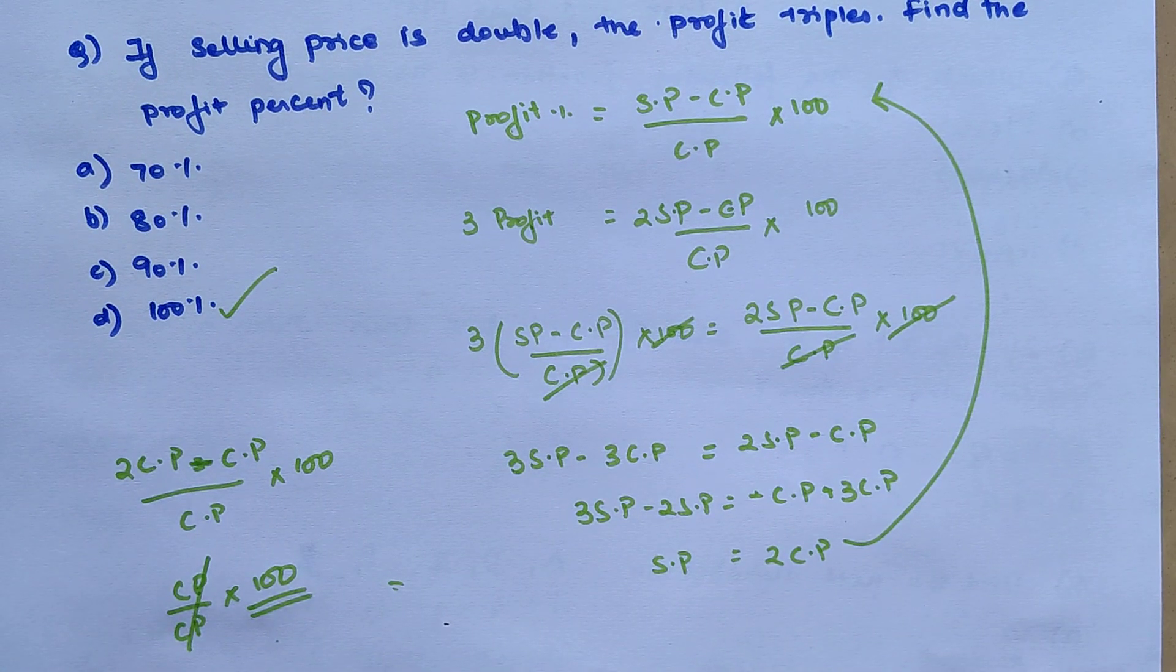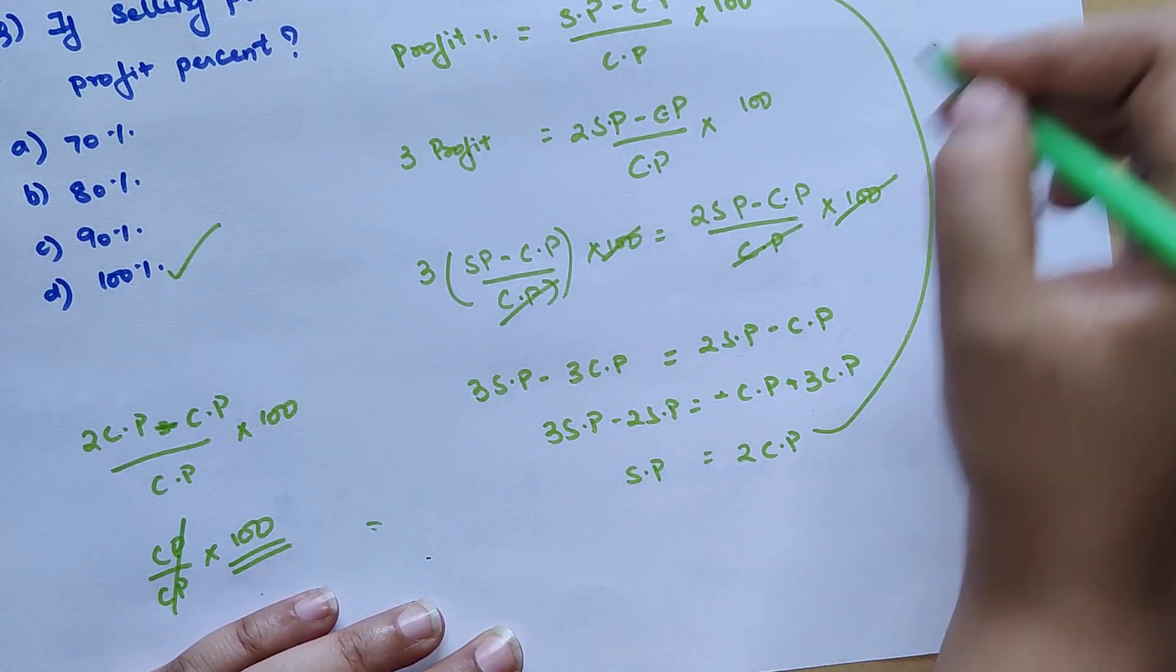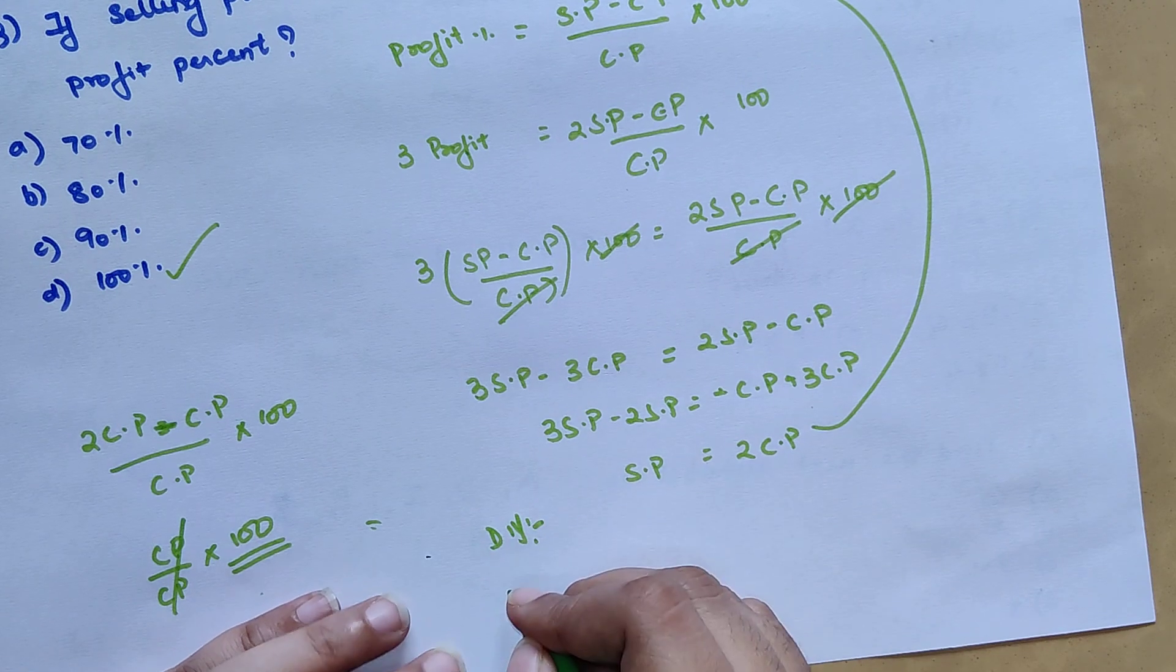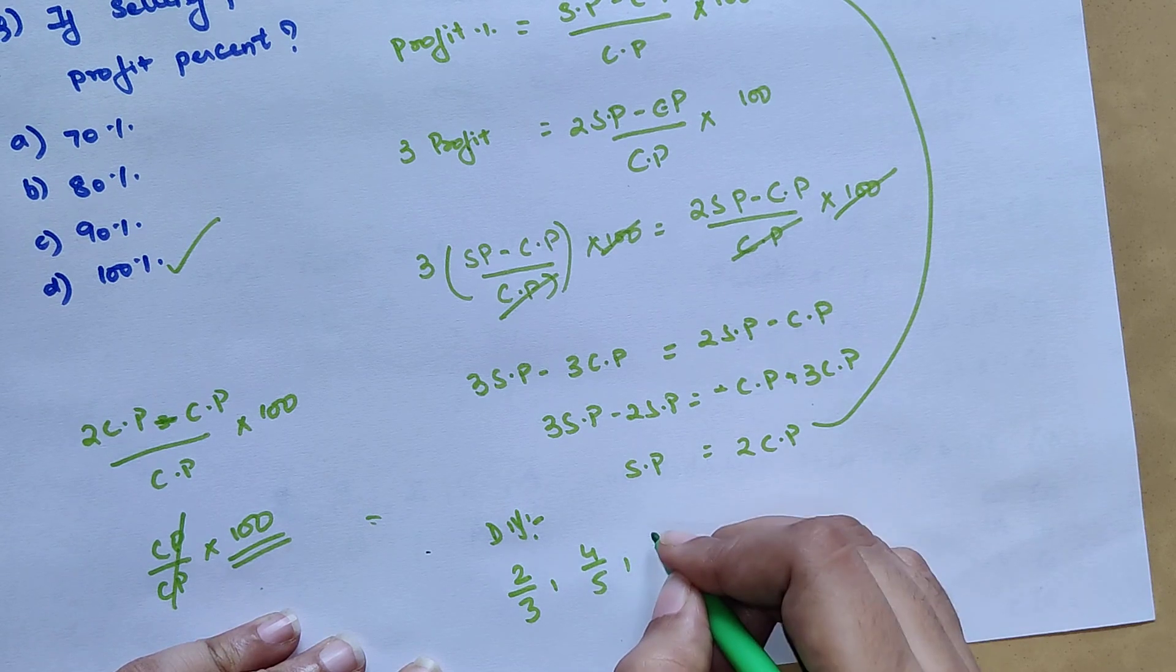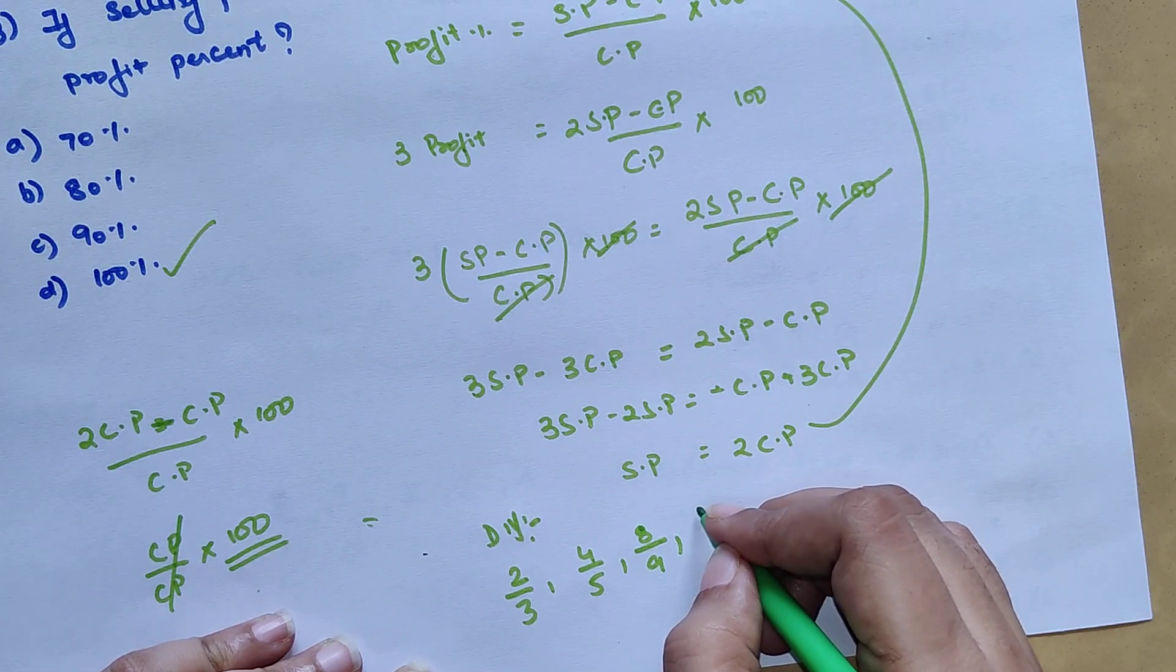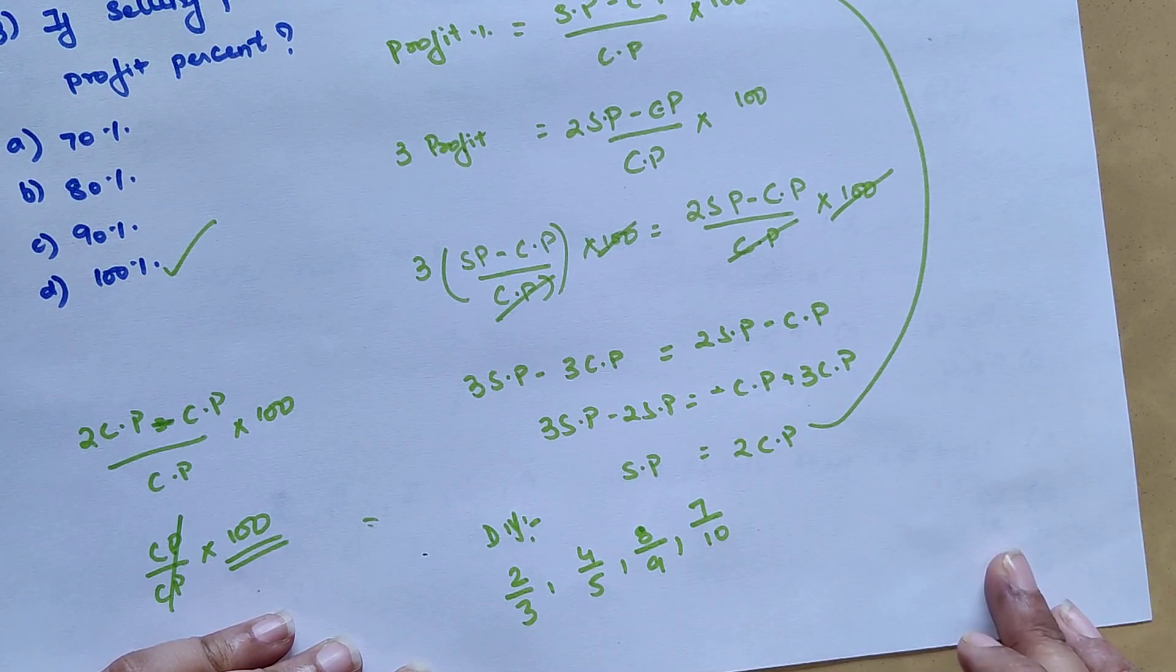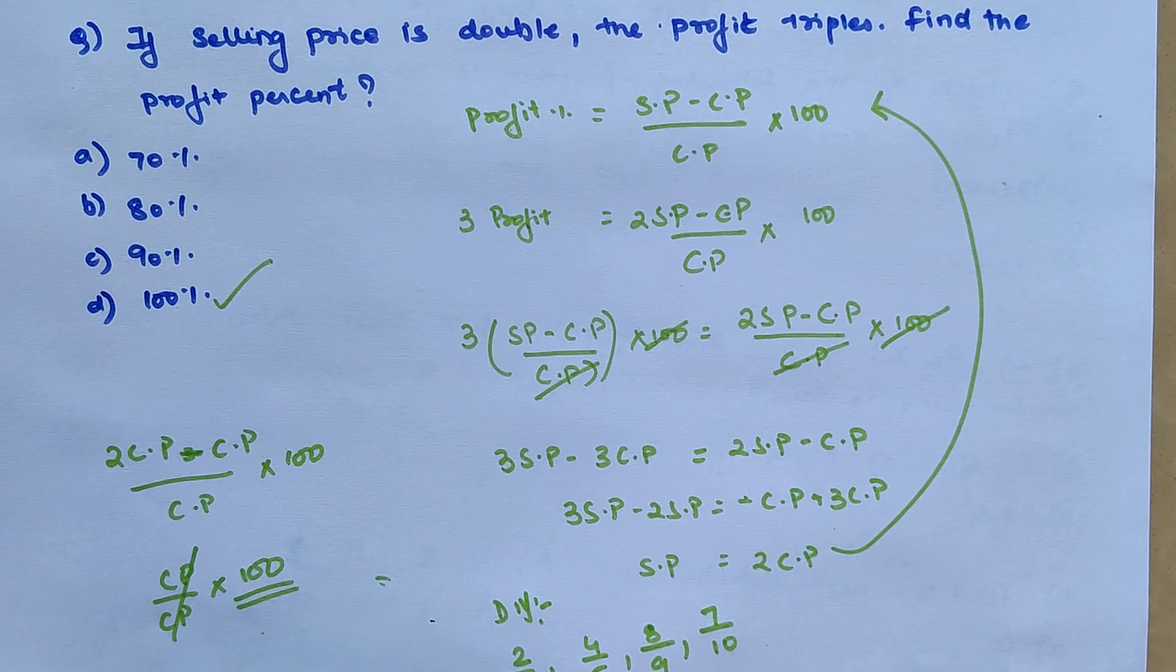Now very quickly coming to your DIY. The question over here is: find the largest fraction between 2 upon 3, 4 upon 5, 8 upon 9, and 7 upon 10. Do let me know your answers in the comment section. That's it for today, I will very soon see you in the next video.